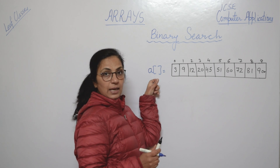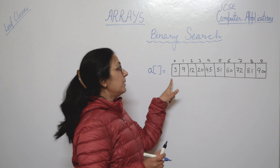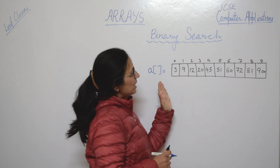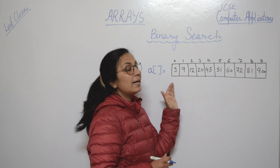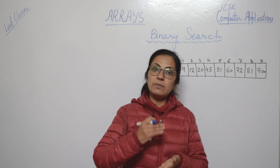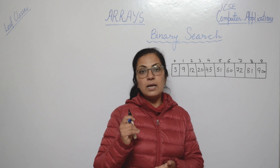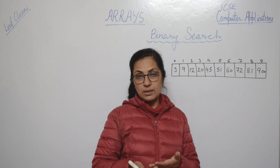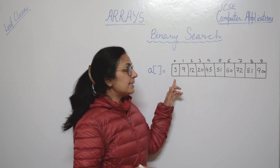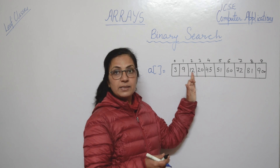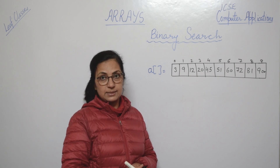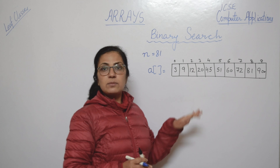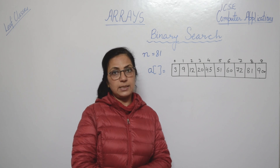I have taken array A of size 10, meaning we will store 10 elements from index number 0 to index number 9. The array elements are stored in ascending order — from smaller to bigger value. Now suppose I want to search the element 81 in this sorted array and check whether 81 is present or not.